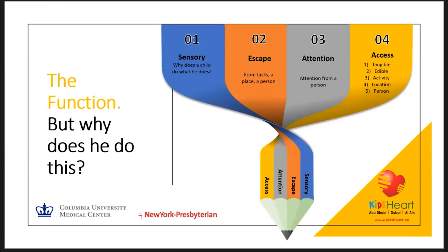In ABA we work on certain principles — we call it 'the function.' Any behavior a person does has four functions. For example, the reason you sit a certain way has a function — sensory feel. Fiddling with your phone has a function — sensory. Every behavior has a function; you can never say 'I don't know why he did that.' The four functions are: sensory, escape, attention, and access. Sensory is when we shake our legs or tap our fingers — there's no visible reason, but it gives us a sensory feel. With children with special needs, some keep flapping or jumping around, especially kids with ADHD.